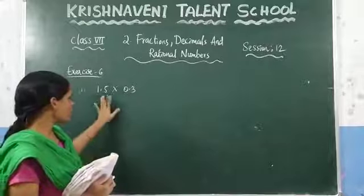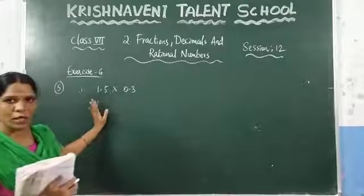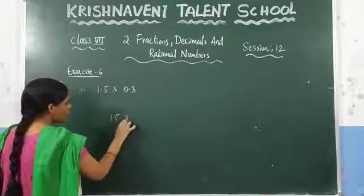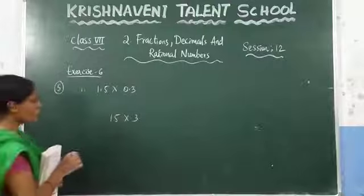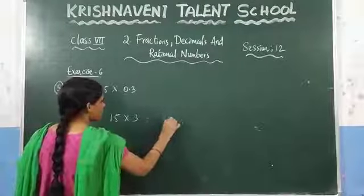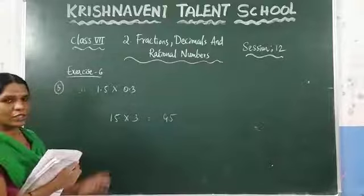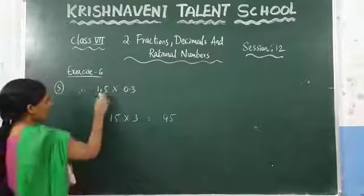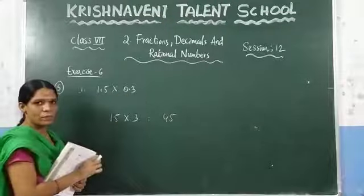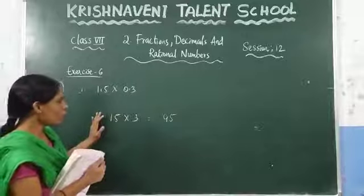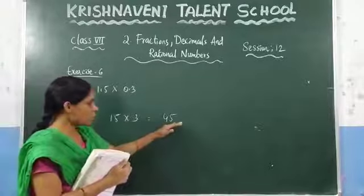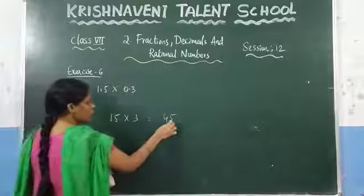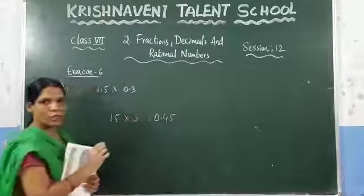Just forget the decimal point and check what numbers are left. If you leave the decimal point, what are the numbers? 15 into 3. Make the product of 15 into 3, which gives you 45. Now check how many numbers are there after the decimal point. Here 1 and here 1 — so 2 numbers are there after the decimal point. Starting from the right, count 2 numbers and before that keep the decimal point, so you get 0.45.